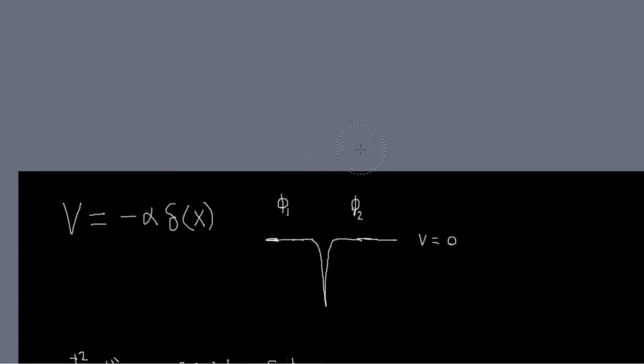Okay, so in this problem we're going to look at this Dirac delta function potential. And this problem's a little bit different from what we've dealt with before, because this potential is kind of weird, in that it's discontinuous.